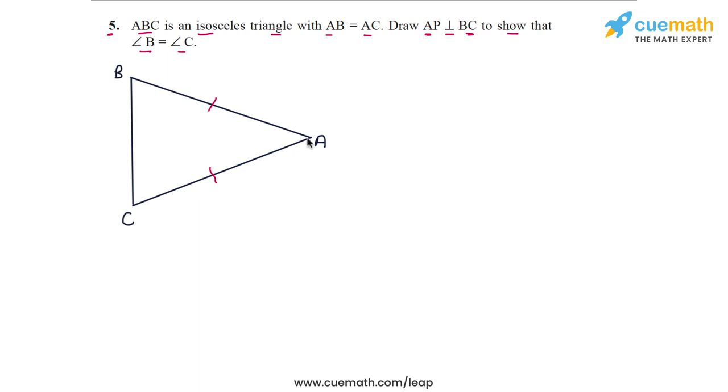From point A we draw this perpendicular line to BC which intersects BC at P. Now using this construction we have to show that the angle at B is equal to the angle at C, or angle B equals angle C.